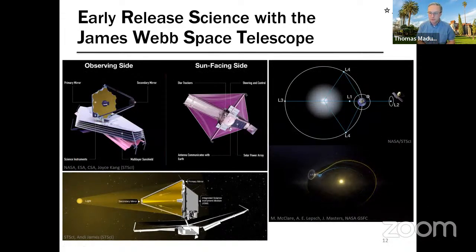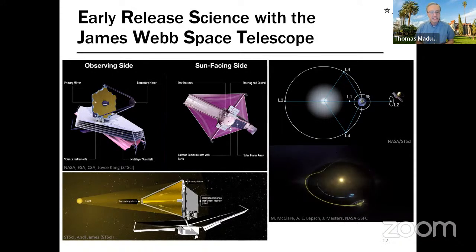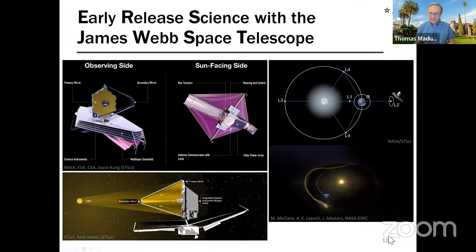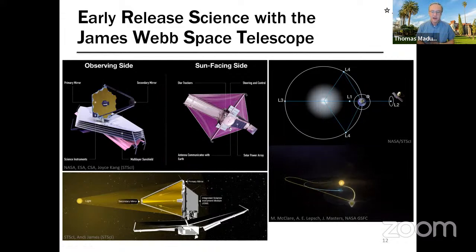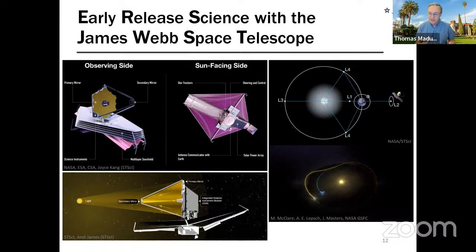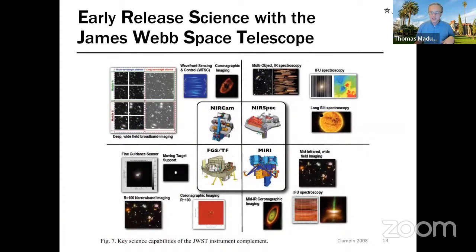The James Webb Space Telescope is NASA's new flagship space telescope. It sits at the second Lagrange point in orbit with Earth around the sun, and it is primarily an infrared telescope designed to look at galaxies, planets, planet formation, dust, and molecules. The scientific instrument I'll be focusing on is MIRI - the Mid-Infrared Instrument.